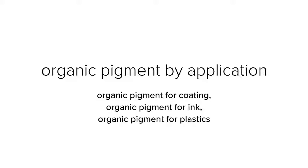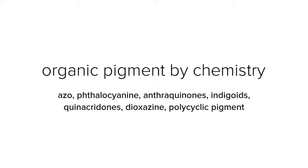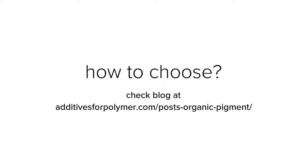When classified by chemistry, organic pigments include azo, phthalocyanine, anthraquinones, indigoids, quinacridones, dioxazine, polycyclic pigments, and more. Selection of organic pigments for these applications varies.